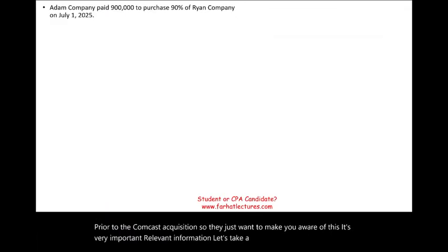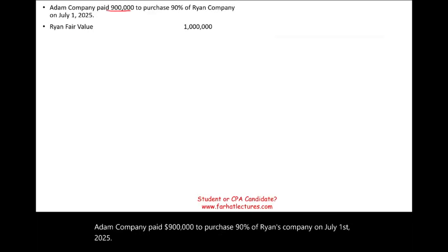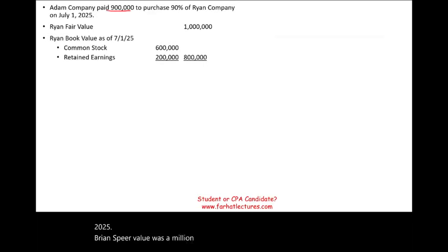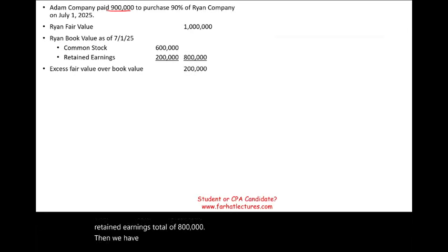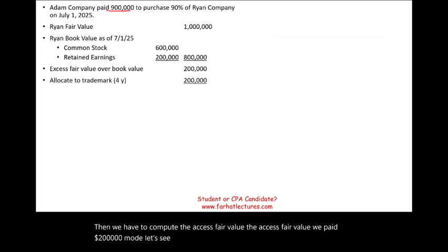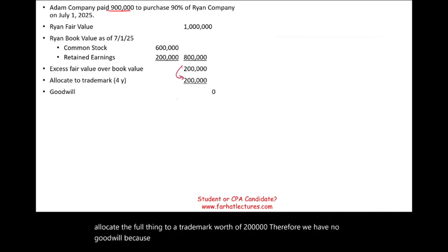Let's take a look at an actual example. Adam Company paid $900,000 to purchase 90% of Ryan's company on July 1st, 2025. Ryan's fair value was $1 million. The book value — common stock and retained earnings — totaled $800,000. The excess fair value is $200,000. We're going to allocate the full amount to a trademark worth $200,000. Therefore, we have no goodwill because the full amount was allocated to the trademark — goodwill is zero.